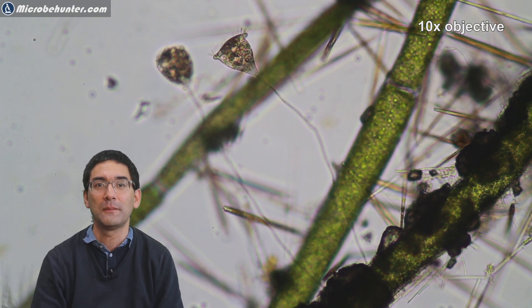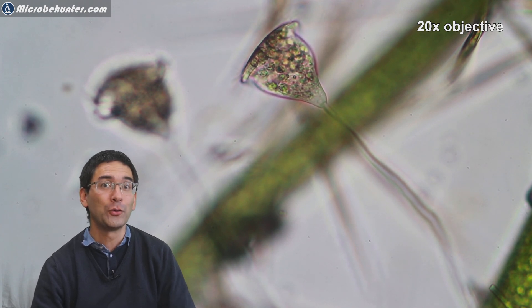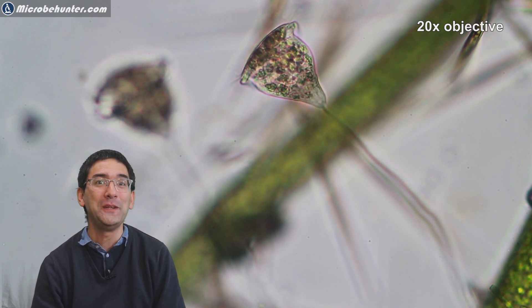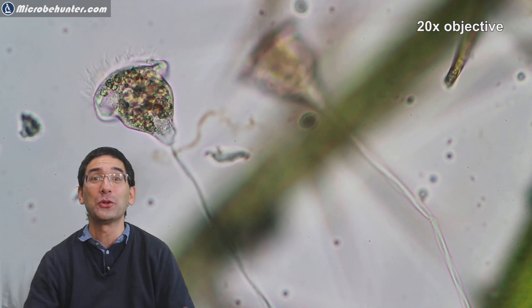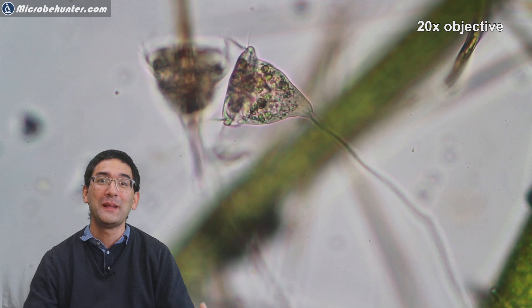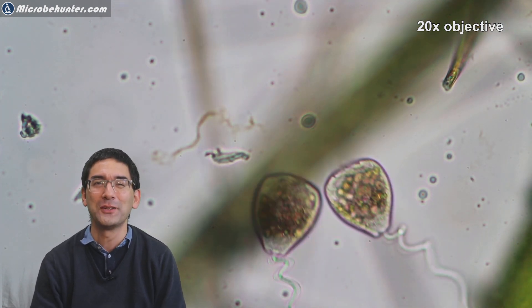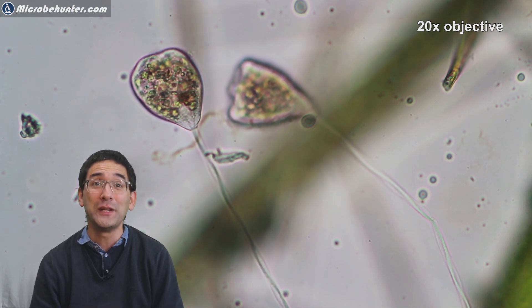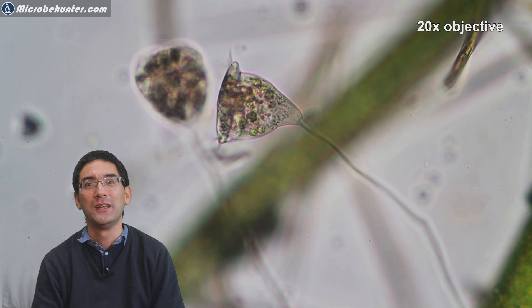Different microorganisms of course have a different way to feed themselves, and these are heterotrophs naturally. This means they do not do photosynthesis but they actually have to eat organic material to get their energy, in contrast to the diatoms which actually are green and which do photosynthesis and also produce oxygen.